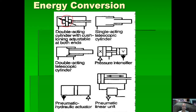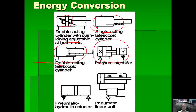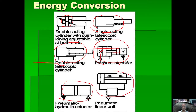We have a double-acting cylinder with adjustable cushioning at both ends, a single-acting telescopic cylinder, a double-acting telescopic cylinder, and a pressure intensifier. If you put pressure on the large area side, the pressure on the small output side will intensify. We also have a pneumatic-hydraulic actuator and a pneumatic linear unit.